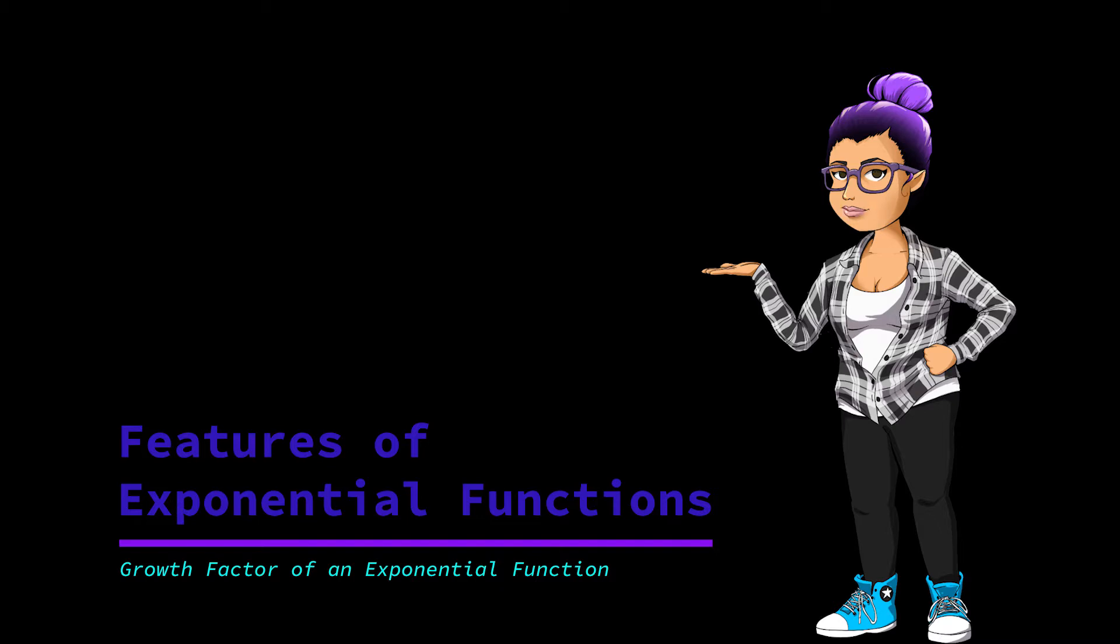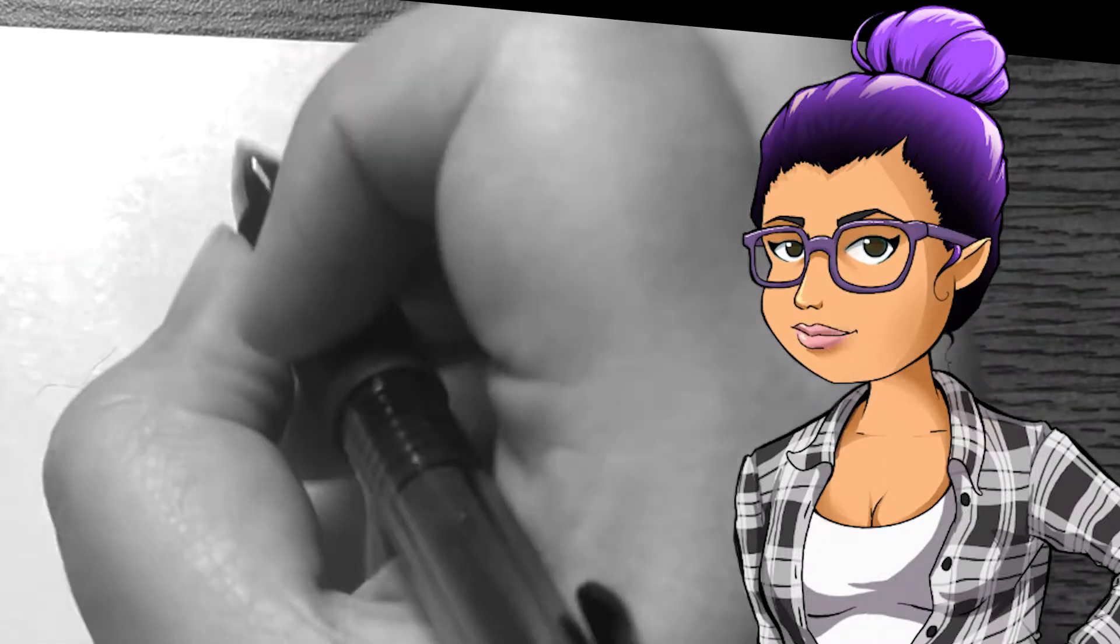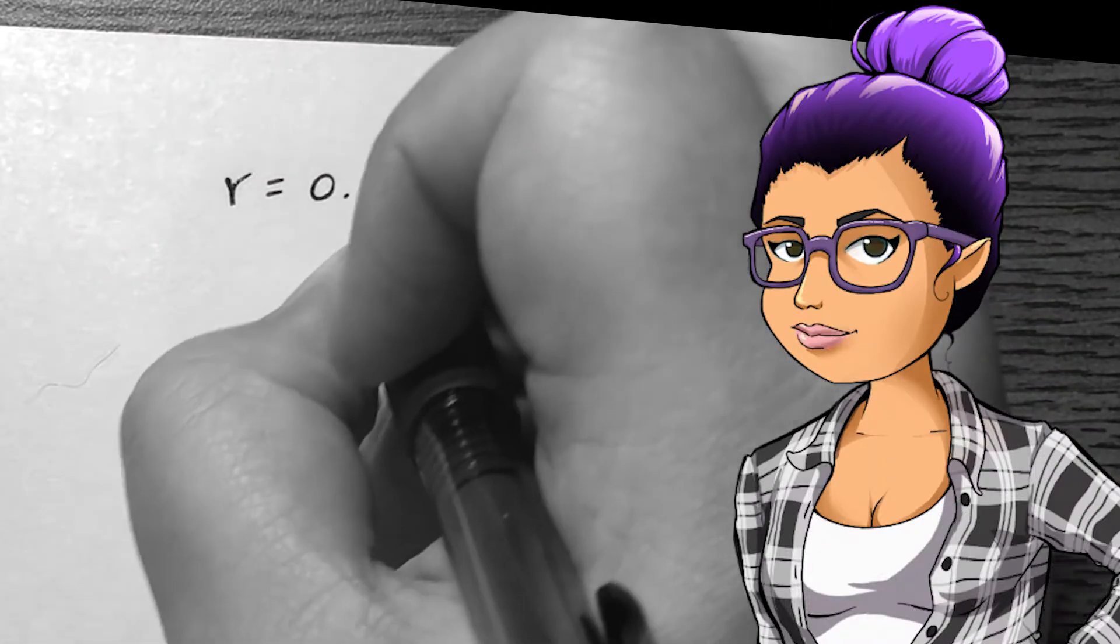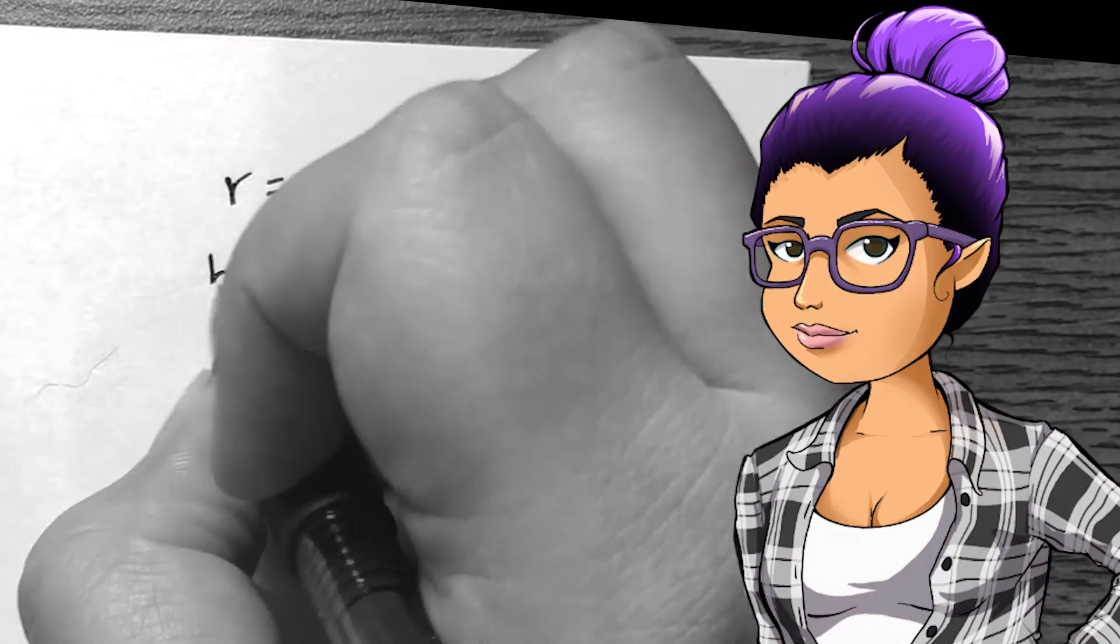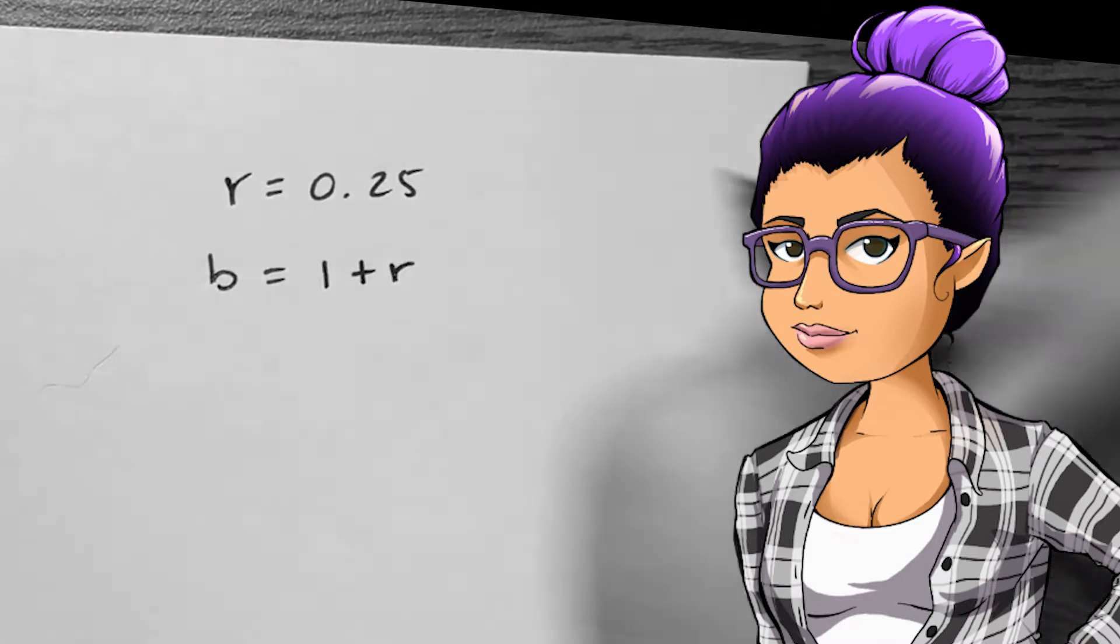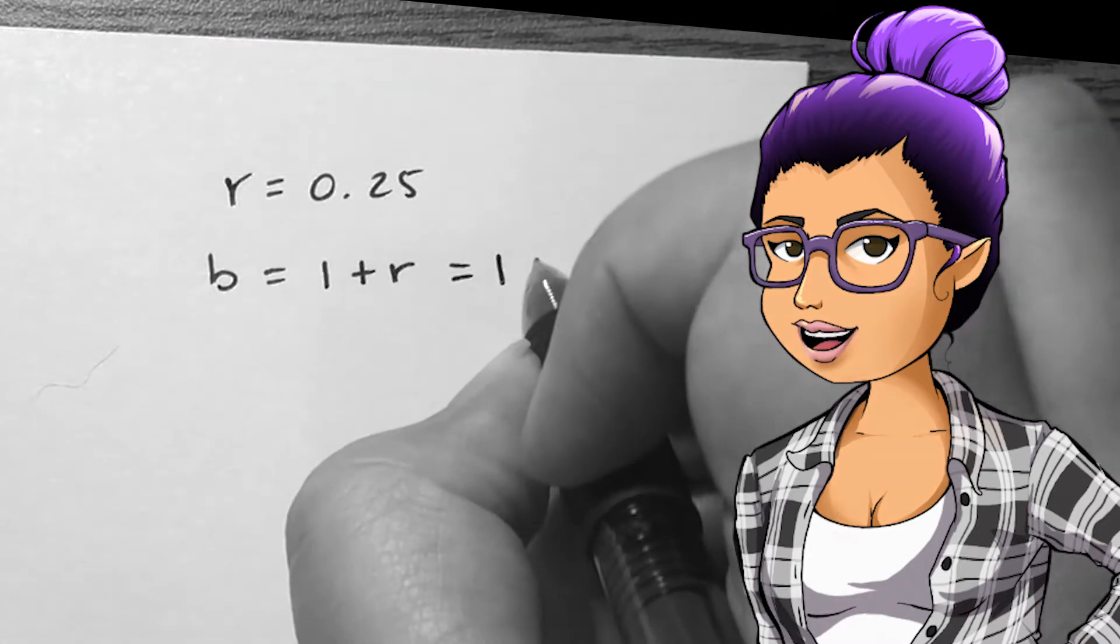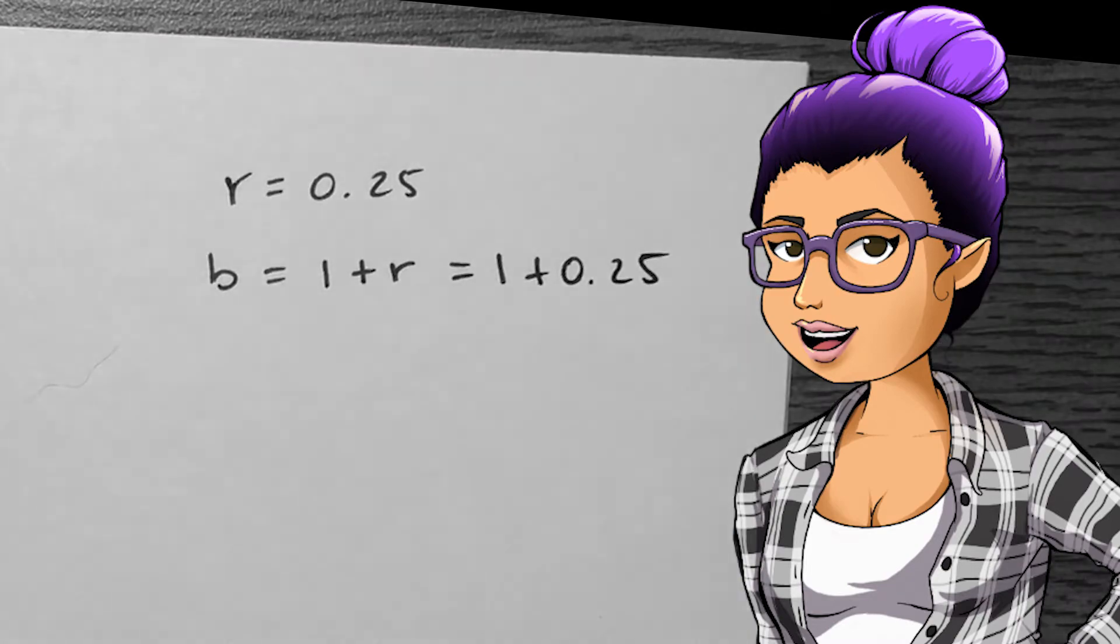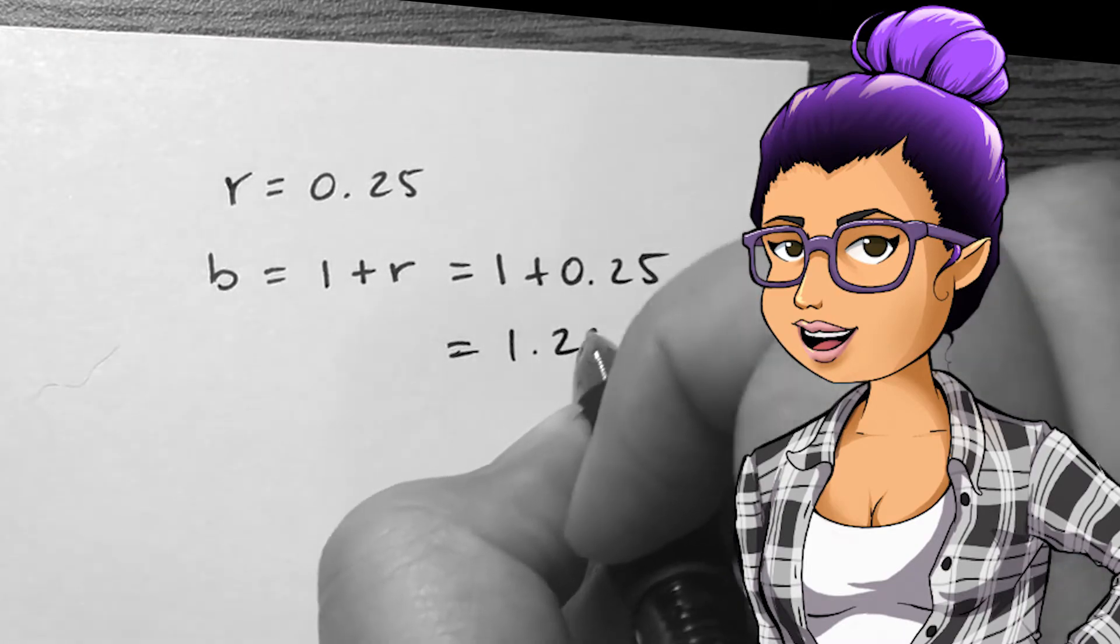In this case, R is called the percentage growth rate. If a function has a percentage growth rate of 25%, then the growth factor is 1 plus 0.25, or 1.25. Each unit up in the inputs will result in a 25% growth in the outputs.